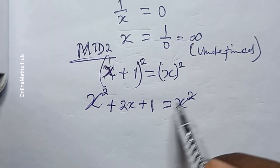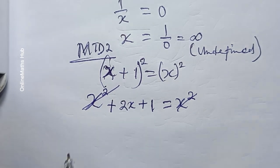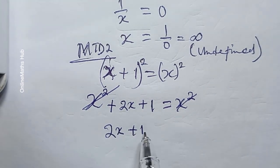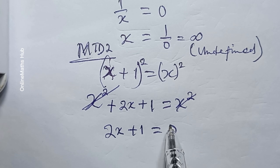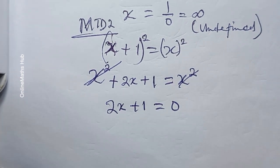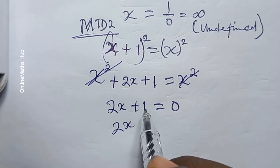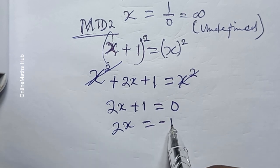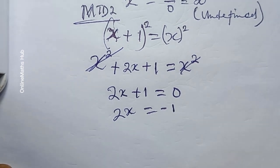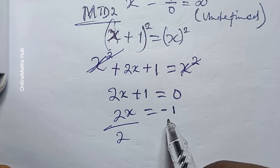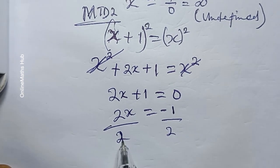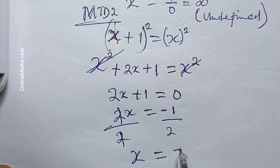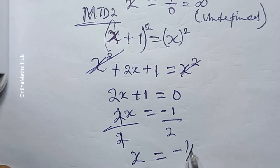The x squared terms cancel, so you have 2x plus 1 is equal to 0. Moving 1 to the other side gives 2x equals negative 1, and dividing by 2 gives x equal to negative 1 over 2.